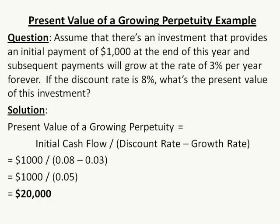So $1,000 divided by 0.08 minus 0.03 equals $1,000 divided by 0.05, which equals $20,000 for the present value of this investment. The present value of this growing perpetuity is $20,000.